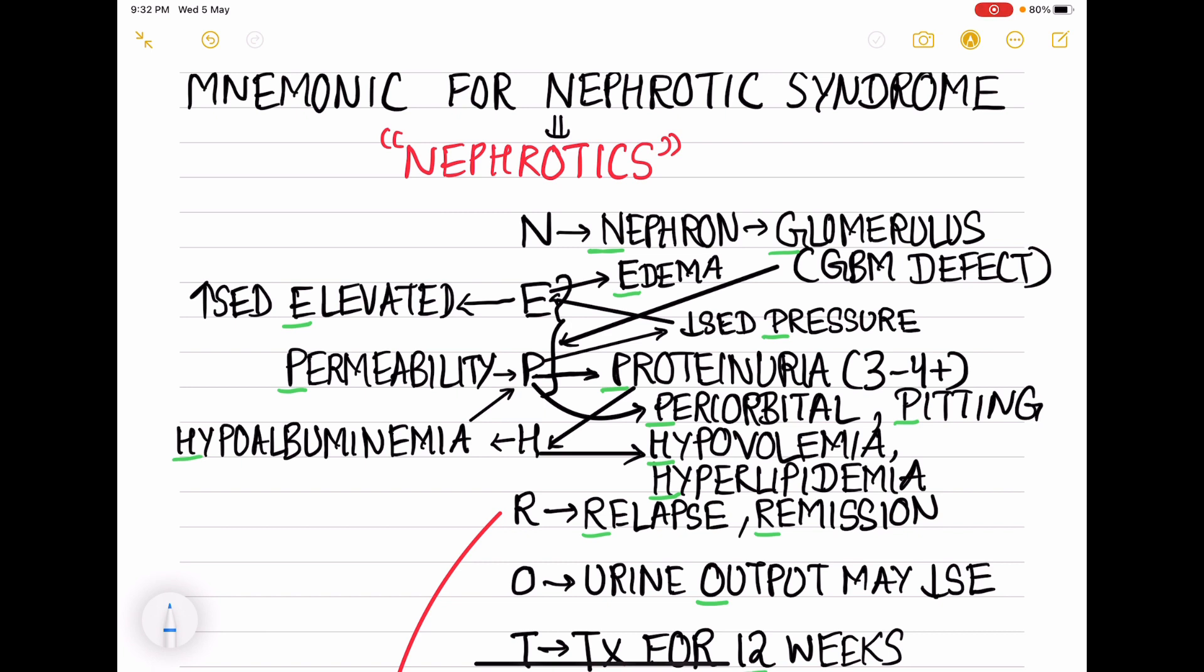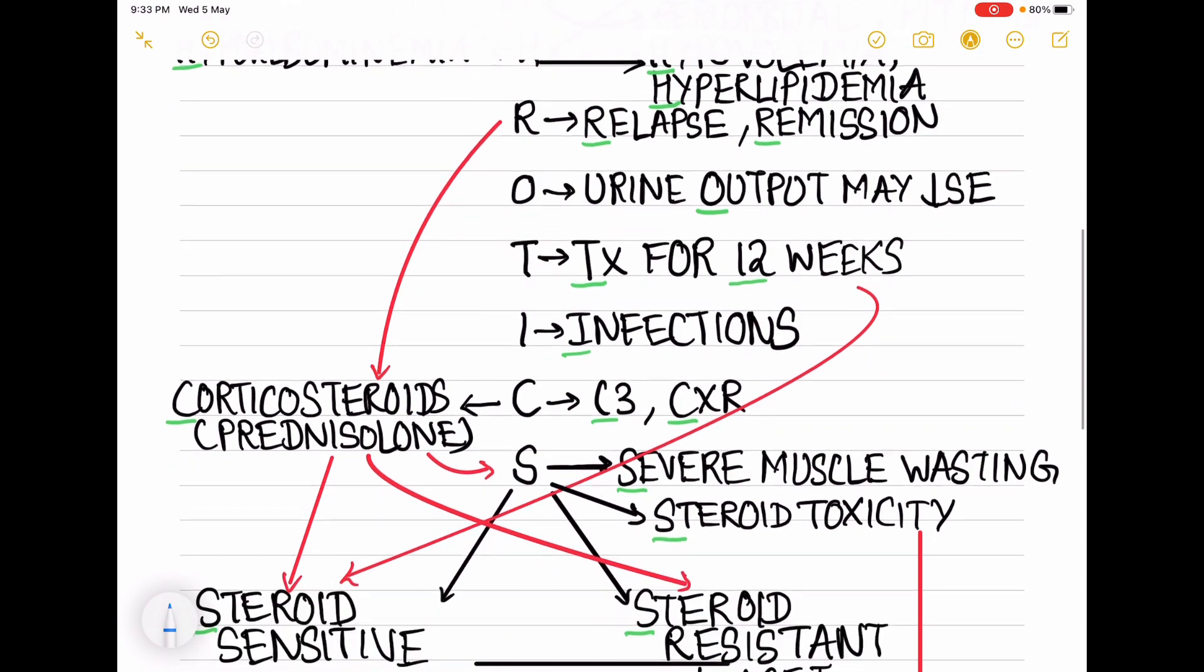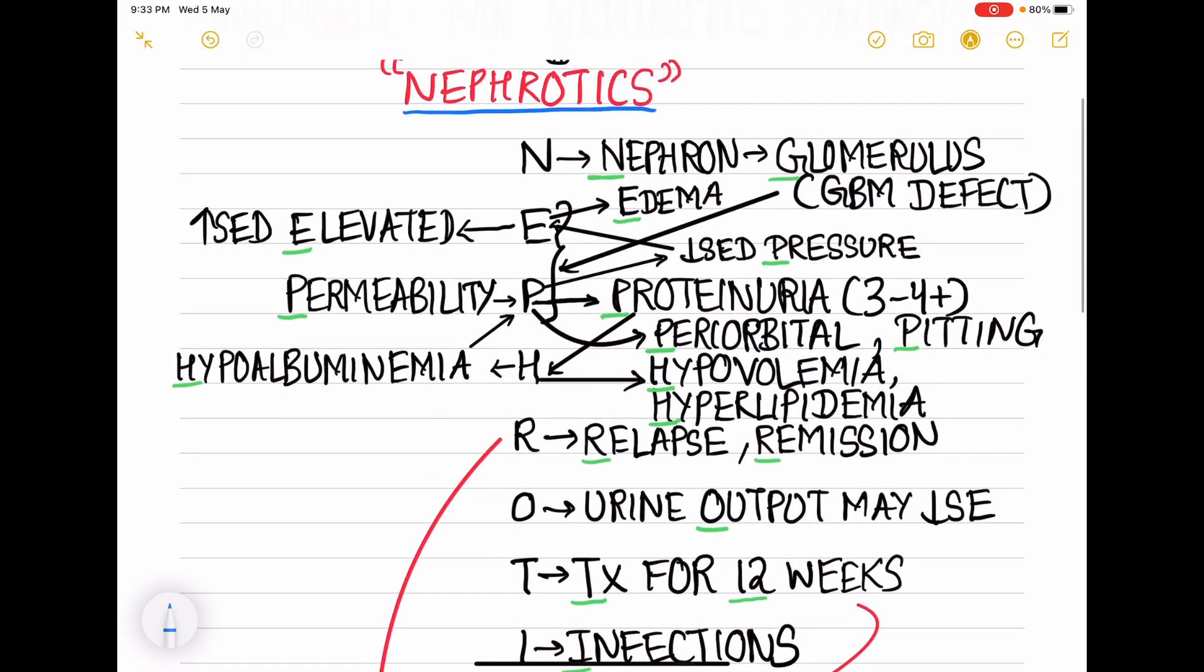I have already dealt with nephrotic syndrome in one of my previous lectures, so let's start the topic. The mnemonic for nephrotic syndrome you can remember as NEPHROTICS or as NEPHROTIC SYNDROME. Each letter - N, E, P, H, R, O, T, I, C, S - will correspond to something.